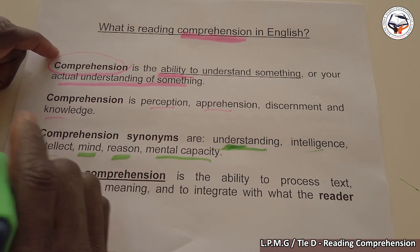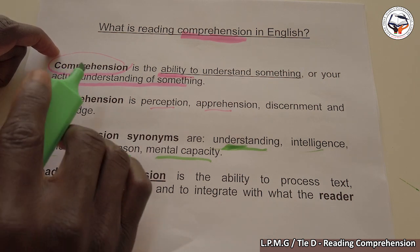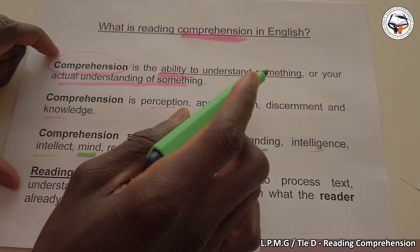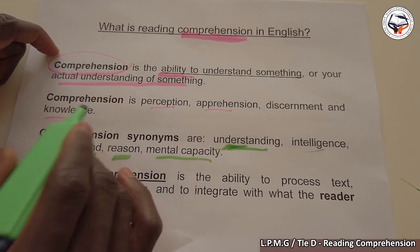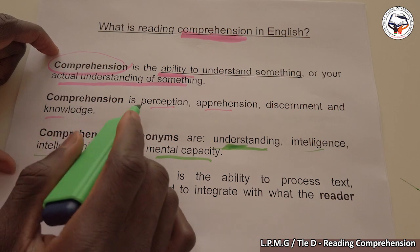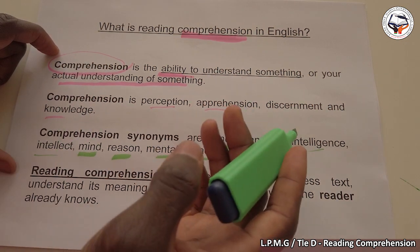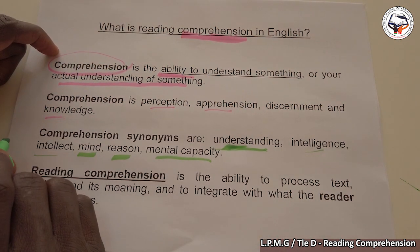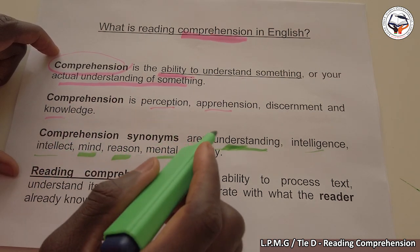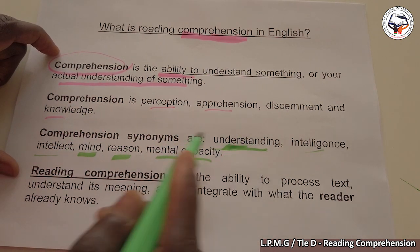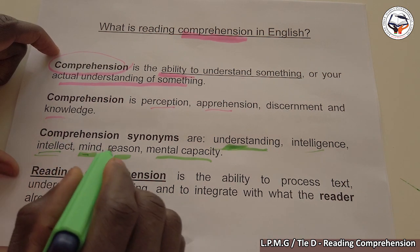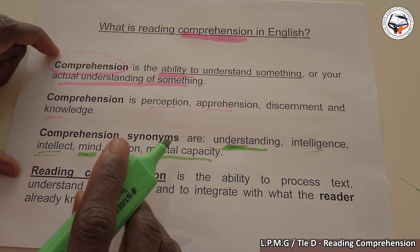Let's recap what comprehension is. Comprehension is the ability to understand something, or actual understanding of something. It is perception, apprehension, discernment, and knowledge. Some synonyms: understanding, intelligence, intellect, the mind, the reason, the mental capacity.